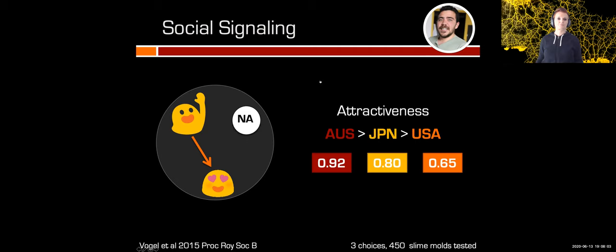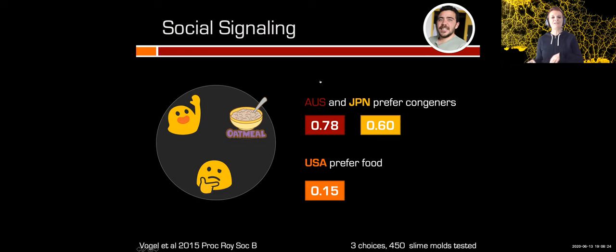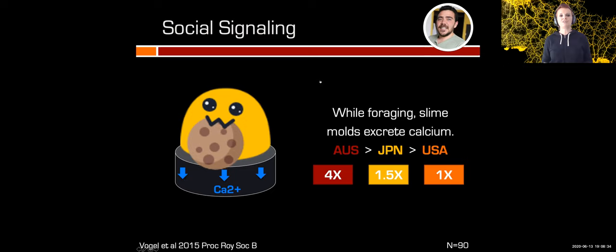We then faced the slime mold with a choice between cues left by congenials and food. Surprisingly, the Australian and Japanese slime molds preferred cues left by congenials over food, while the American slime mold preferred to go to food — only 15% went to congenial cues. Looking at the literature, we noticed that slime molds release calcium when exploring their environment, so we wondered if calcium was the cue being used to locate congenials.